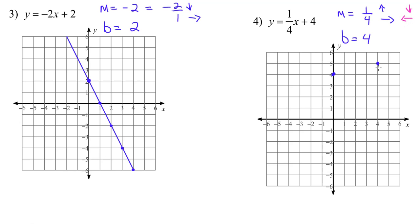From my y-intercept, if I move down 1 and left 4, you'll see how that point lines up perfectly with the other two. That is how going backwards — doing the exact opposite — is the same as moving the way the slope tells you. You only move left when you run out of space and need to work backwards. Positive means move up, negative means move down. Now let me get my straight edge and draw the graph of y equals 1/4 x plus 4.